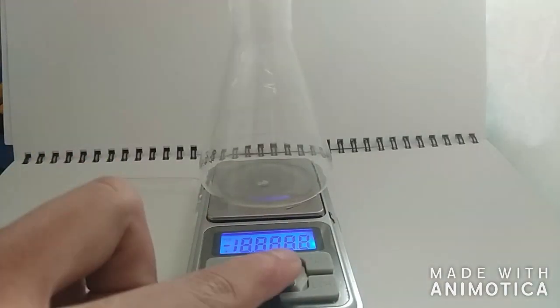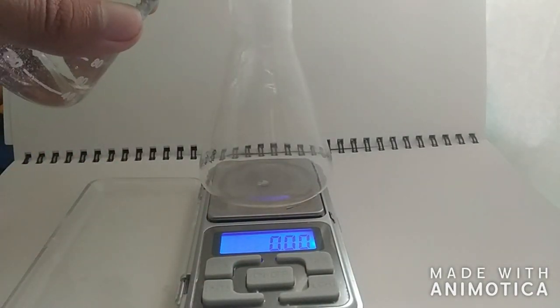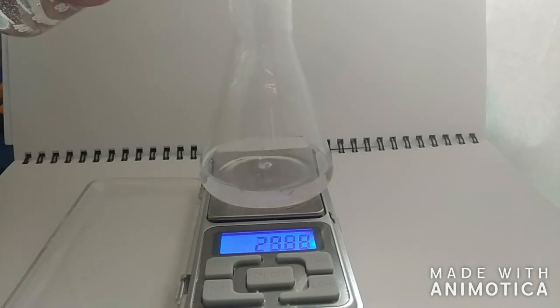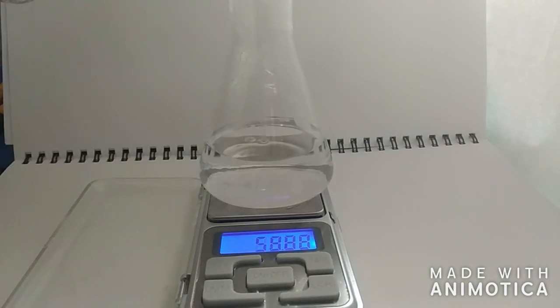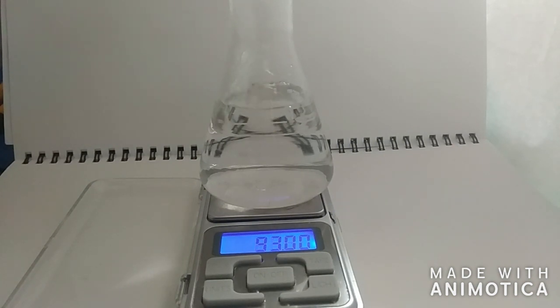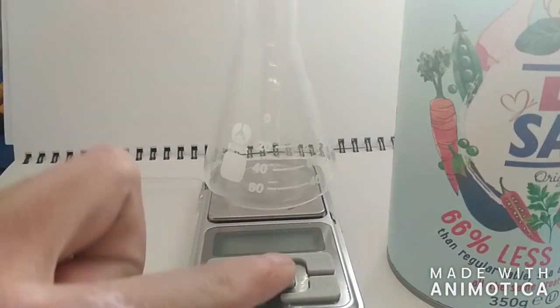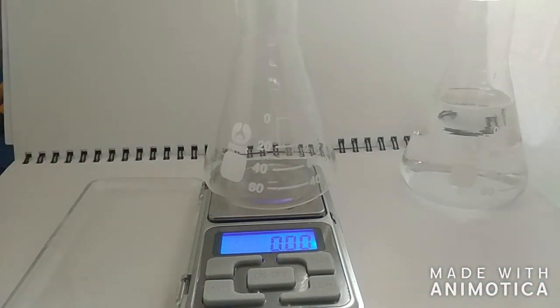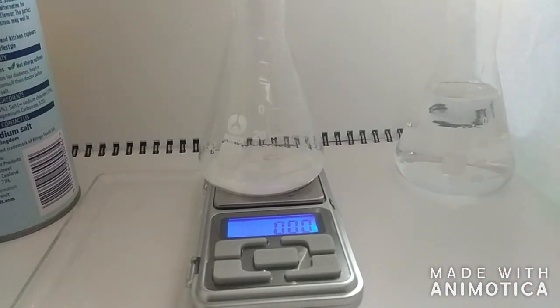So first we are going to weigh about 100 grams of water and 54 grams of low-salt, which is comprised of 66% potassium chloride and 33% sodium chloride and 1% magnesium carbonate as an anti-caking agent.